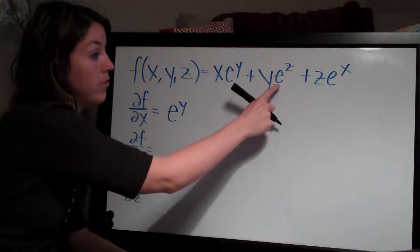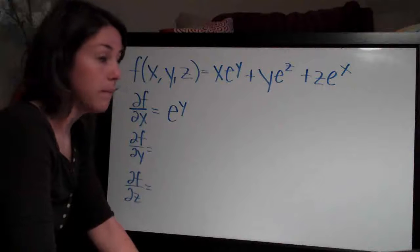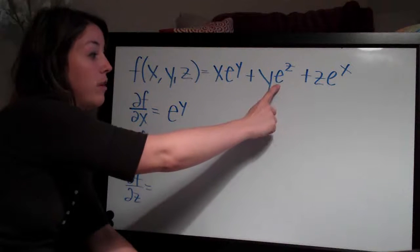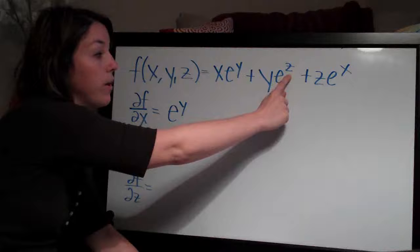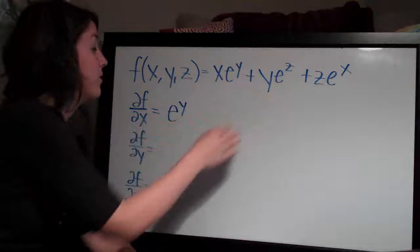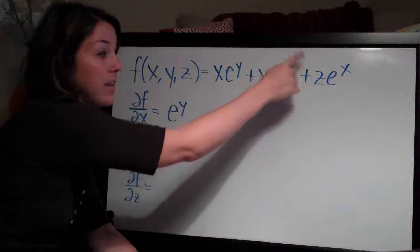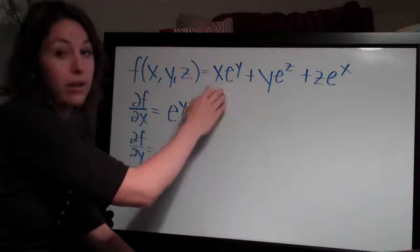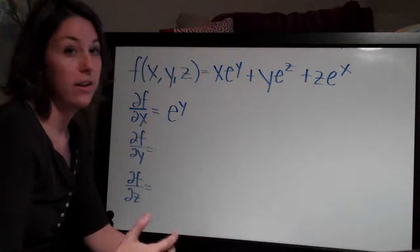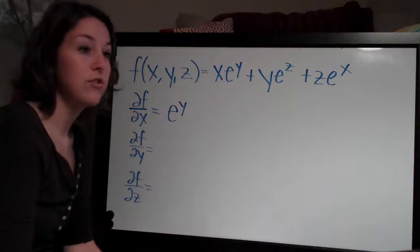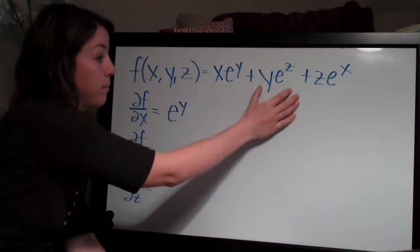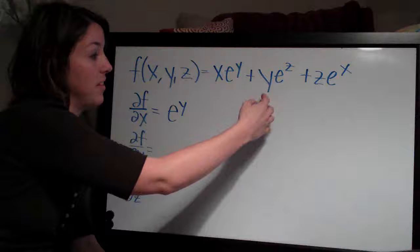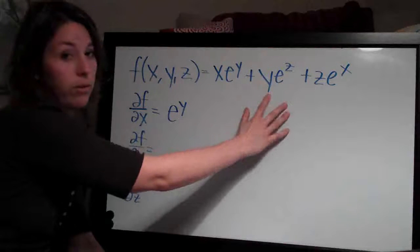Then we look at the second term, y e to the z. Because it has no x variable in it, it's actually just going to reduce to zero. e is a constant, e raised to z — which we're holding constant because we're taking the derivative with respect to x — e to the z becomes a constant, and y is also a constant. So this whole thing reduces to something like a number, and the derivative of any constant is just zero. Since there's no x term in this, we don't have to deal with it at all.